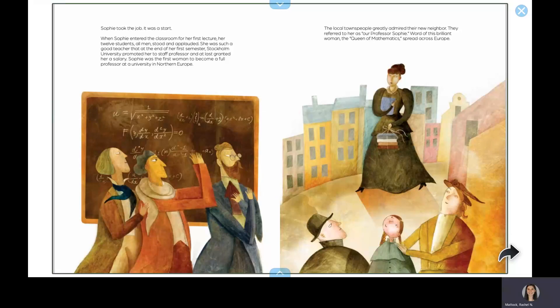When Sophie entered the classroom for her first lecture, her 12 students, all men, stood and applauded. She was such a good teacher that at the end of her first semester, Stockholm University promoted her to staff professor and at last granted her a salary. Sophie was the first woman to become a full professor at a university in northern Europe. The local townspeople greatly admired their new neighbor. They referred to her as our professor Sophie.